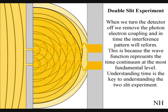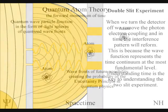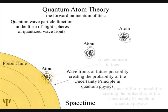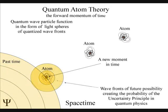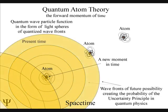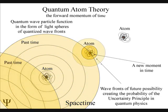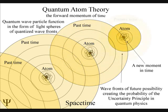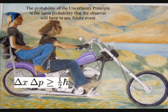Understanding time is the key to understanding the two-slit experiment. In this theory, the wave function represents the time continuum at the most fundamental level. Time only moves forward because the probability of the wave function only works one way. We always know the position or momentum of a quantum particle in the past. The uncertainty principle of quantum physics is the same uncertainty that the observer will have with any future event.